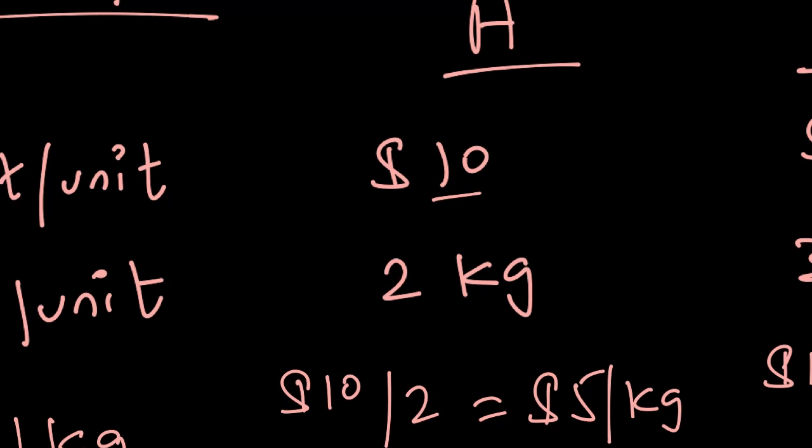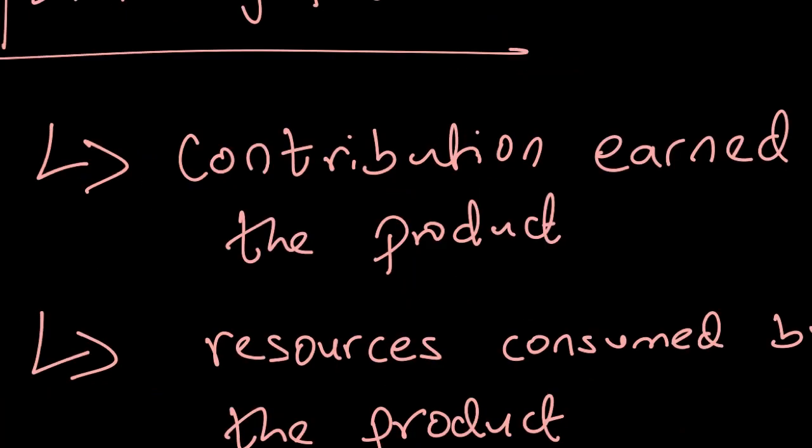We should rank product A as number one—that is the product that I should prioritize over product B—and then rank product B as number two. The ranking is based on this metric: contribution upon kg, or we can say contribution upon the limiting factor.